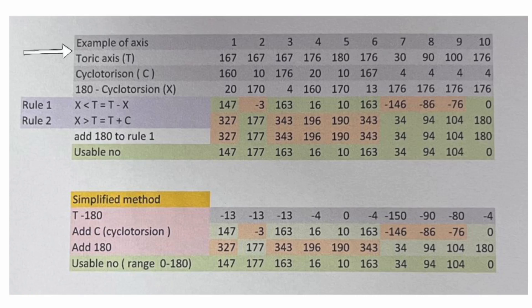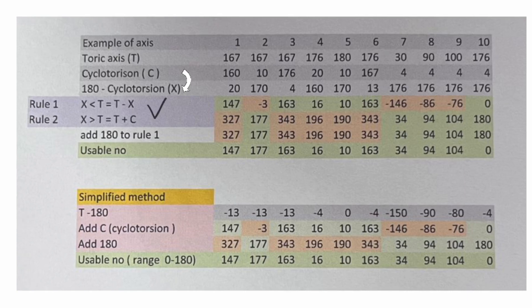Using various data sets, I have formulated two rules: we take 180 minus cyclotorsion as X. If X is less than T, subtraction of the TORIC axis from X is done; if X is more than the TORIC axis, you just add cyclotorsion to the TORIC axis. Highlighted green areas show the usable numbers, and there is a simplified method to do this.